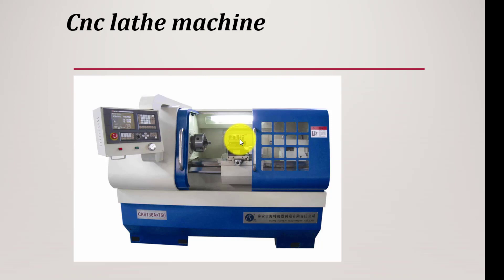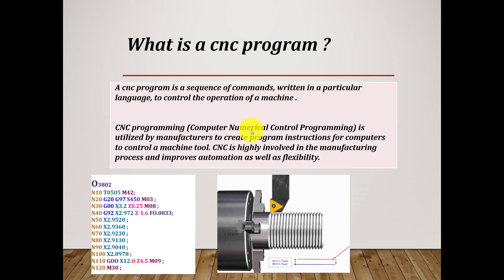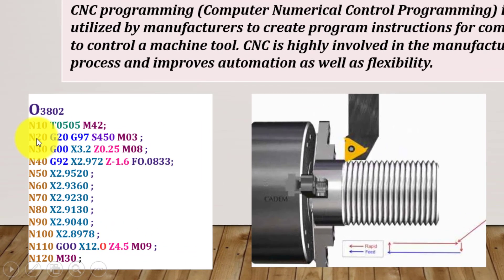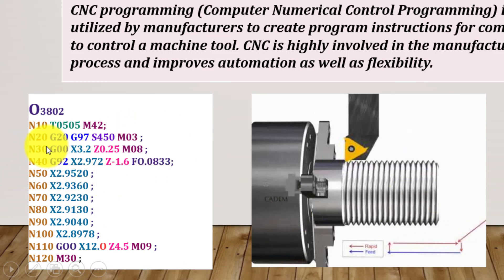Now we have to understand CNC programming. What is a CNC program? A CNC program is a sequence of commands written in a particular language to control the operation of a machine. You can see this is the input and this is the output — a set of instructions or commands which gives the output of a threaded component. The program is basically a set of instructions using numbers, letters and symbols — all these combinations are set to produce the output.